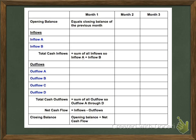Inflows typically will be sales — there can be a few other inflows, but typically for us it will be sales. Outflows can be a variety of items: utilities, wages, rent, etc. The totals for both are pretty simple to calculate. Net cash flow is just your inflows minus your outflows. And our closing balance is that opening balance plus our net cash flow, which tells us at the end of the month how much cash do we have.